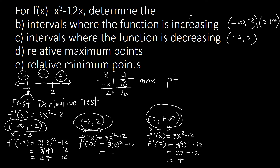At x = 2, the function goes from decreasing on the left to increasing on the right, so that is a minimum point. Therefore, the relative maximum point is (-2, 16), and the relative minimum point is (2, -16).